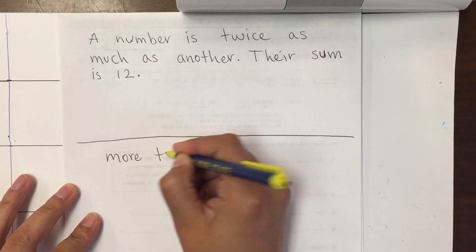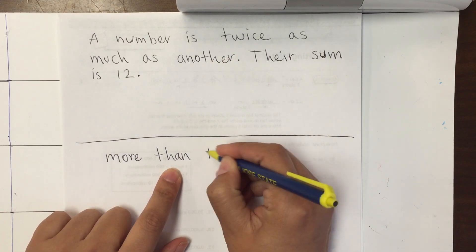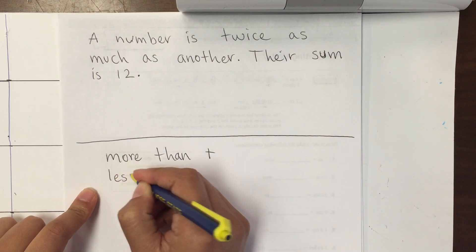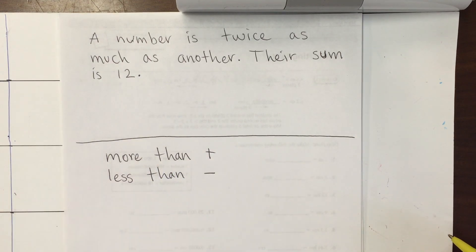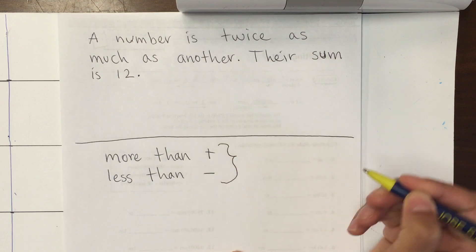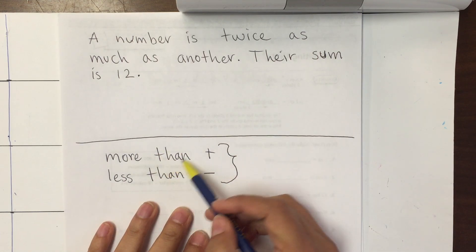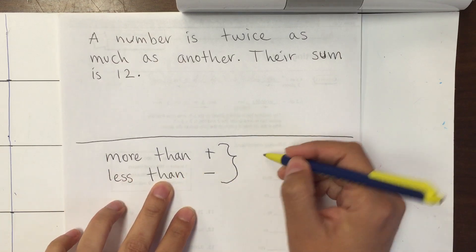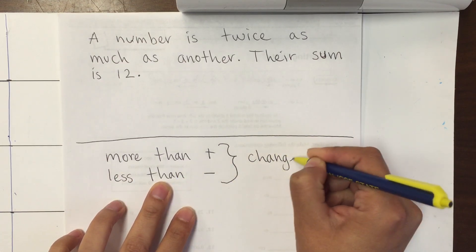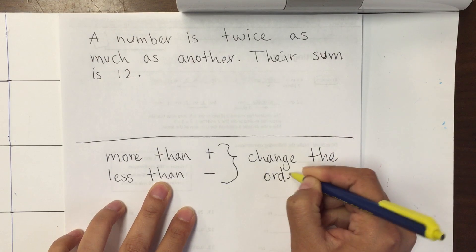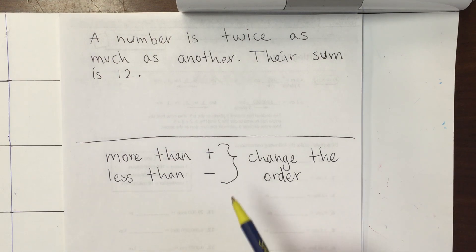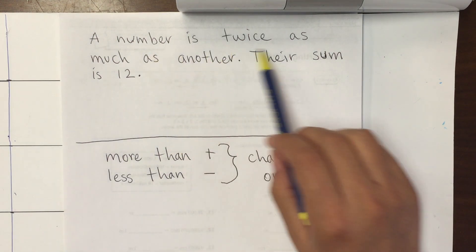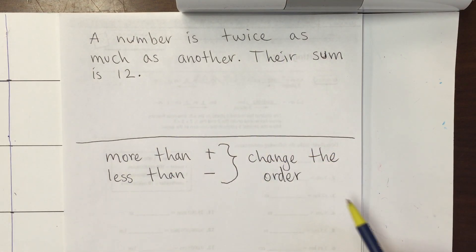So 'more than' is addition. 'Less than' is subtraction. There are more words you're probably familiar with, but the reason I'm mentioning these is because there are special ones. Whenever you see the word 'than' — more than or less than — you're going to change the order. I'm saying this because you will need that information in some of the word problems. In this one we don't need it, but the next ones we might.